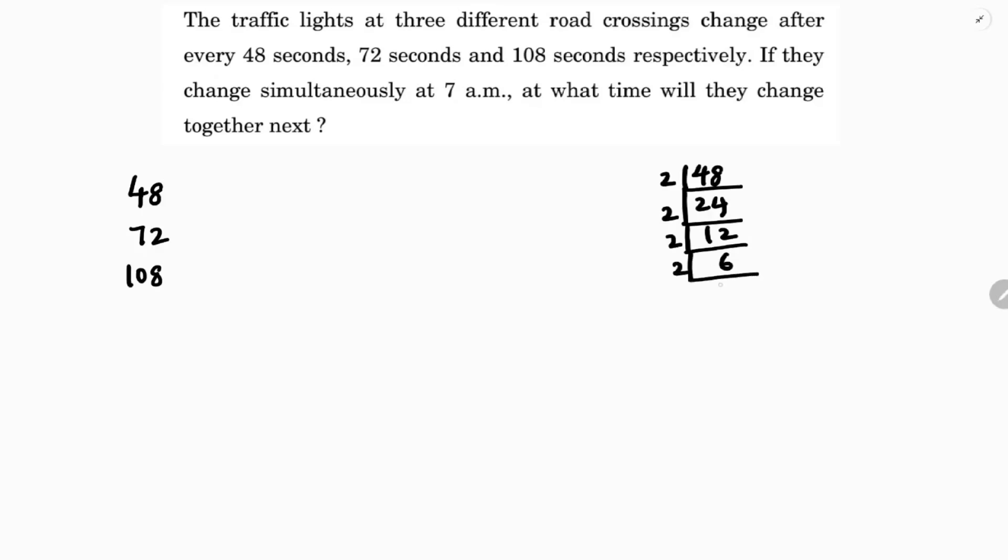So here, 2 to the power 4 into 3. 72 is 8 times 9, which is 2 cubed into 3 squared. You can write it, or you can do prime factorization: 2 times 36, 2 times 18, 2 times 9, 3 times 3. So it is 2 cubed into 3 squared.